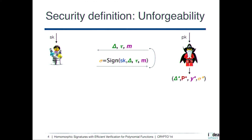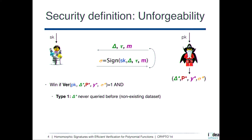The tricky part is defining what a forgery is in this model, because of course the adversary can run the evaluation algorithm to compute signatures honestly. A forgery in this model is essentially a tuple consisting of a data set, some program P, an output, and a signature that verifies correctly with respect to the verification algorithm. There are three cases to consider. The first is when the data set claimed by the adversary was never queried during the game — the adversary never saw a signature for that data set and should not be able to produce one.